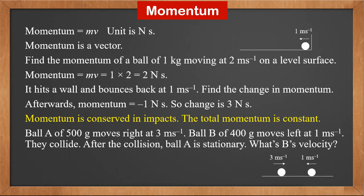Ball A of 500 grams moves right at 3 meters per second. Ball B of 400 grams moves left at 1 meter per second. They collide. After the collision, ball A is stationary. What is B's velocity?